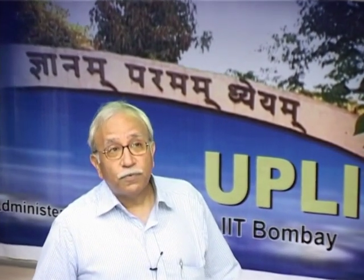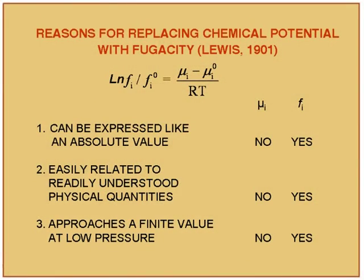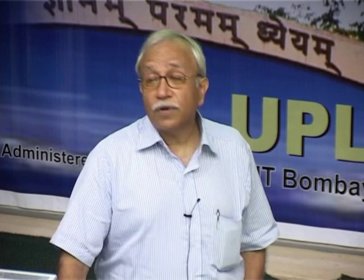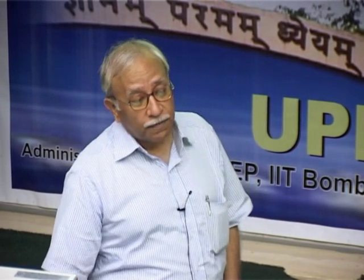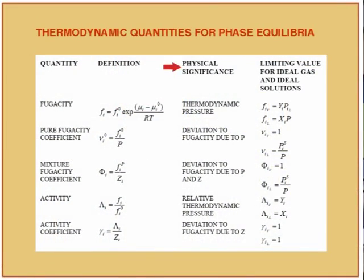Fugacity is called a thermodynamic pressure. This is the relationship between fugacity and chemical potential. Three observations comparing chemical potential and fugacity: first, fugacity can be expressed as an absolute value. When pressures are low and we talk about a pure component, fugacity becomes the pressure; for a multi-component system, it becomes the partial pressure. So it has physical significance and becomes a measurable property.